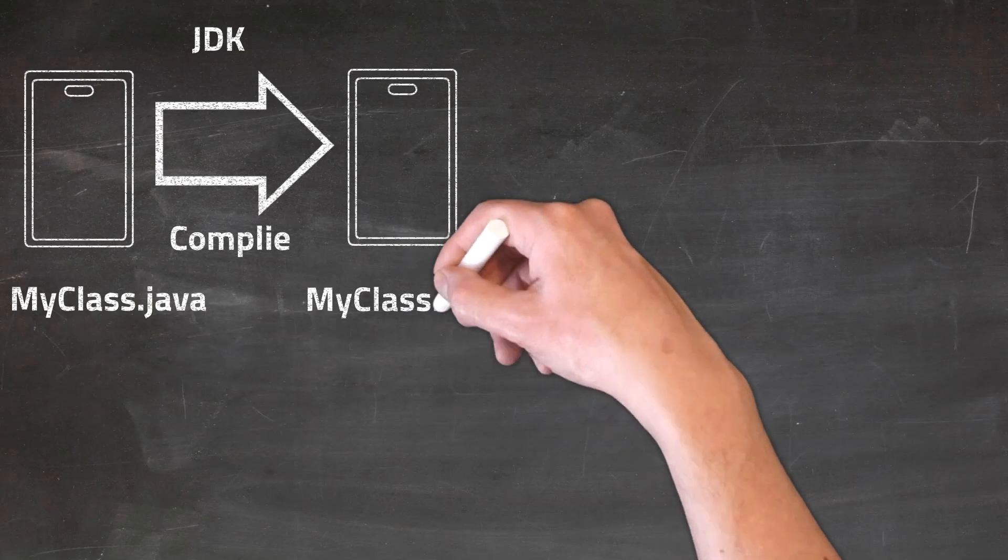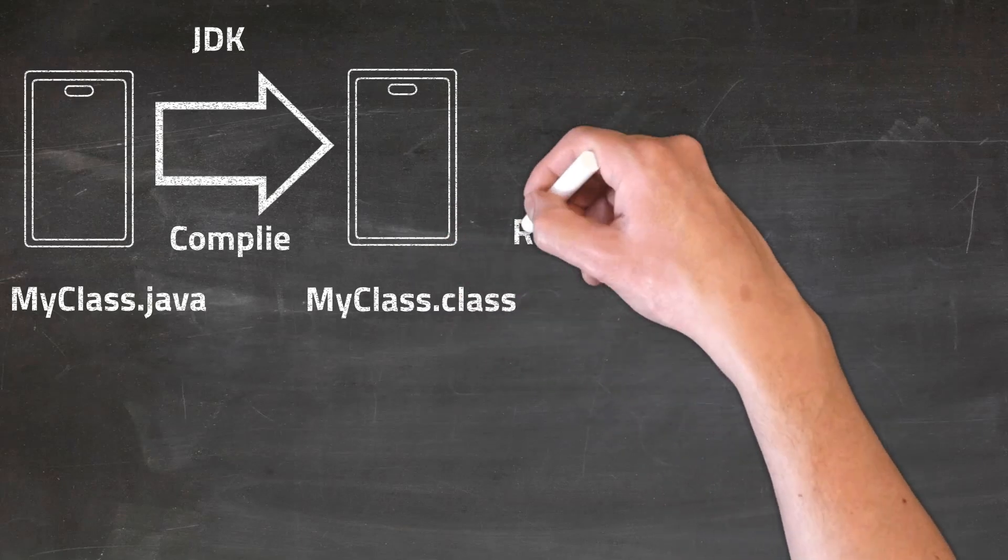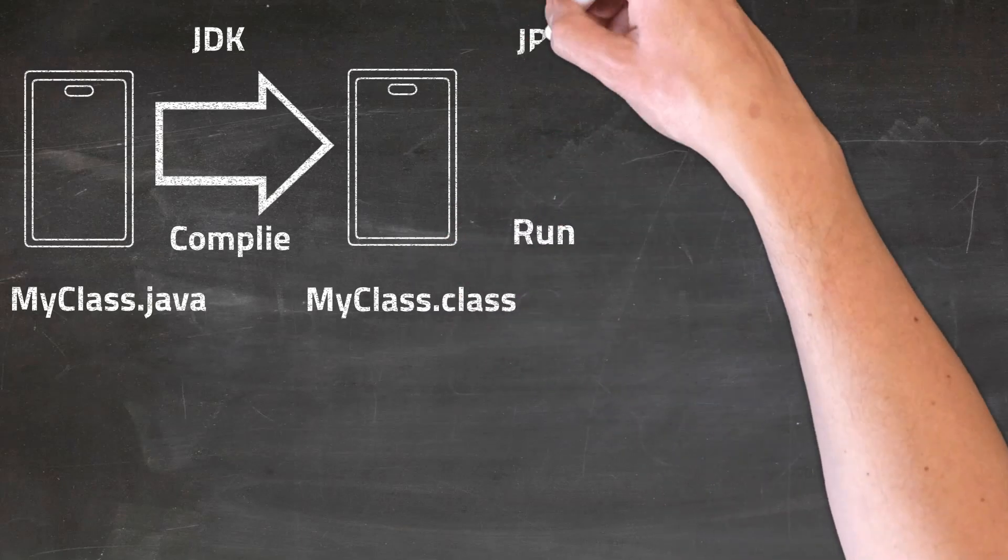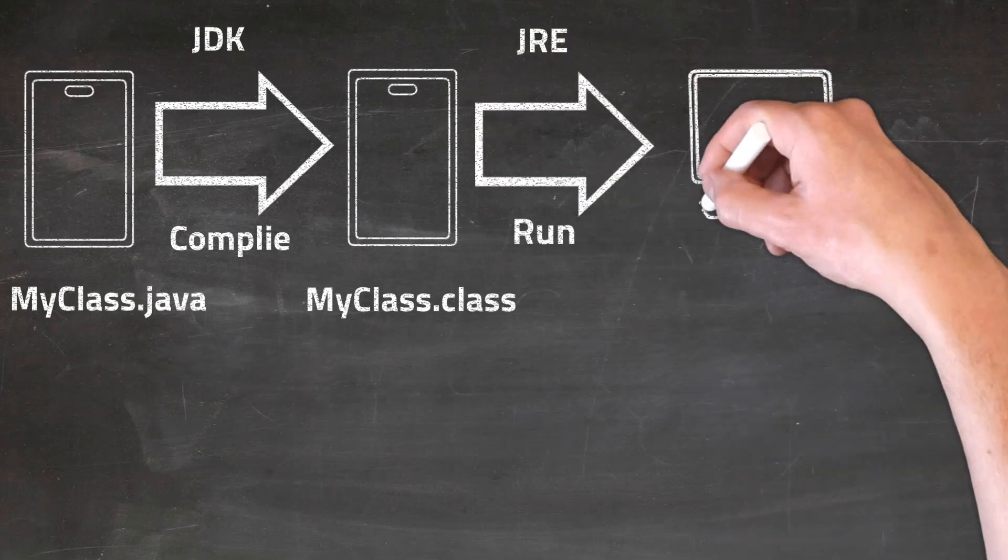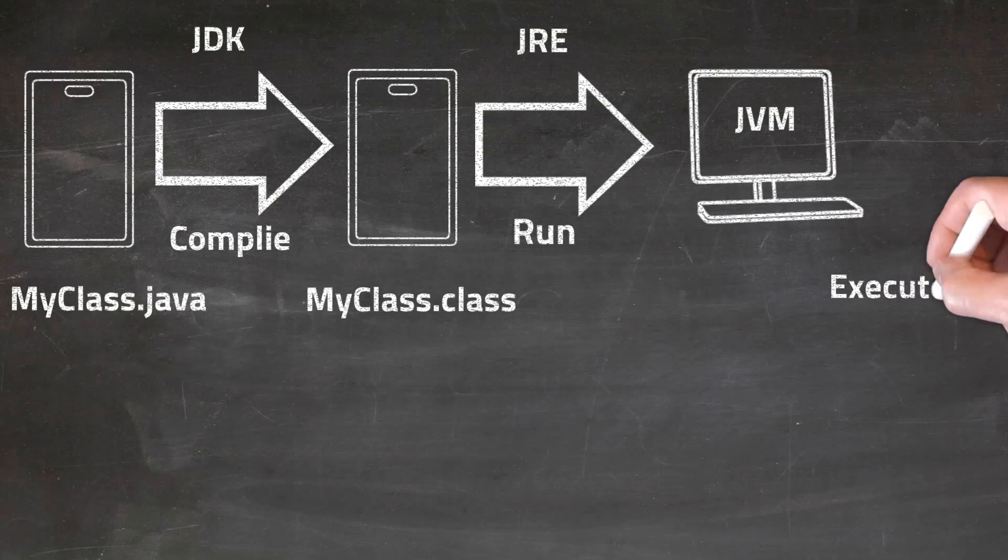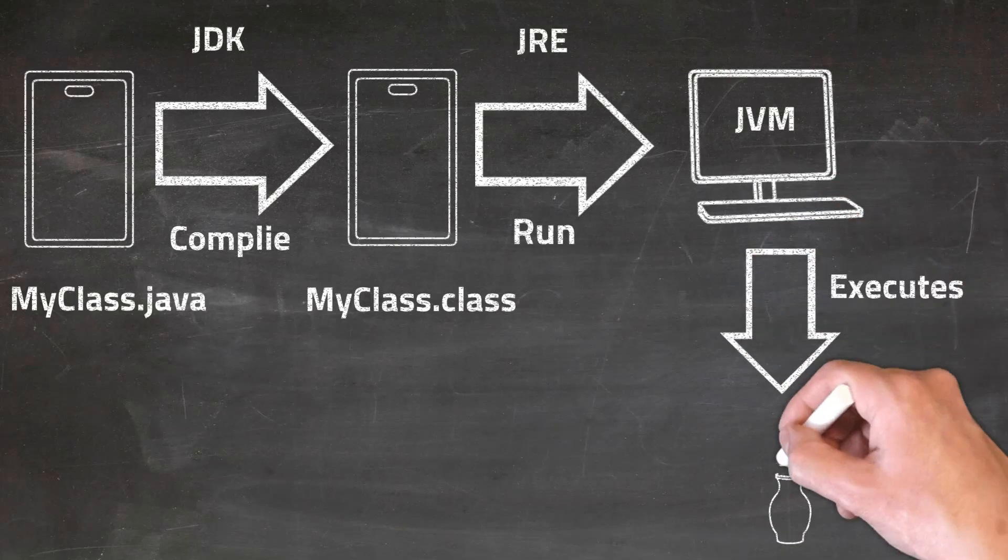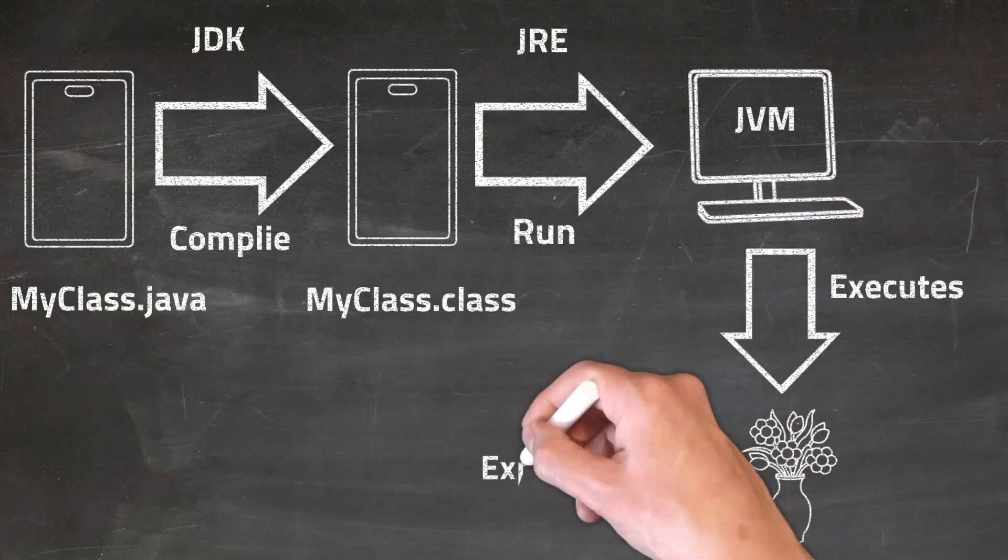Now when you try to run this file, the JRE will come into picture. It will instantiate a Java Virtual Machine for you, and the Java Virtual Machine will then execute this code to produce your expected output.